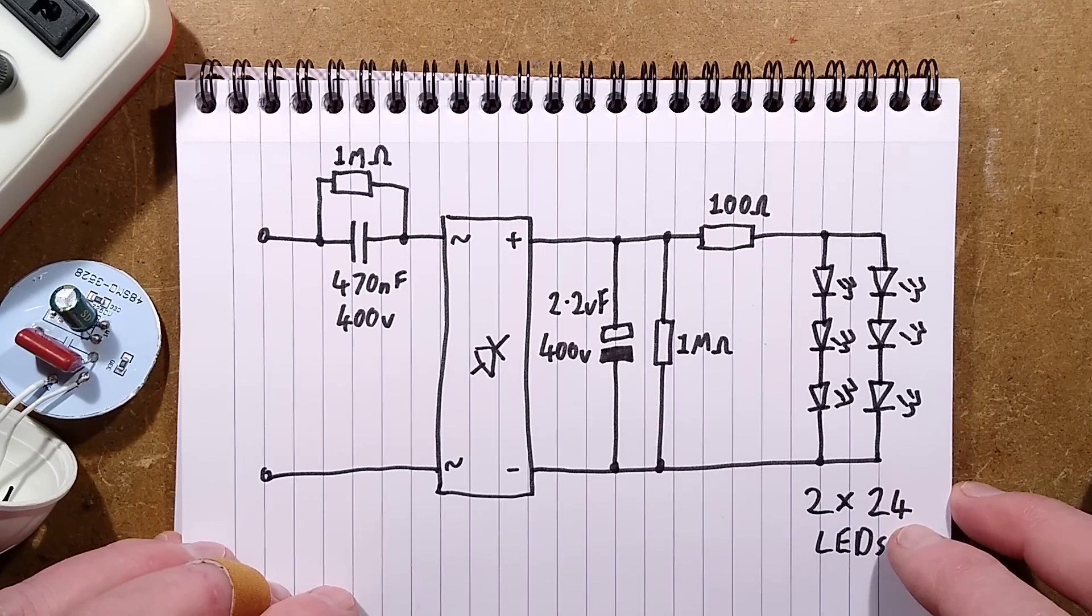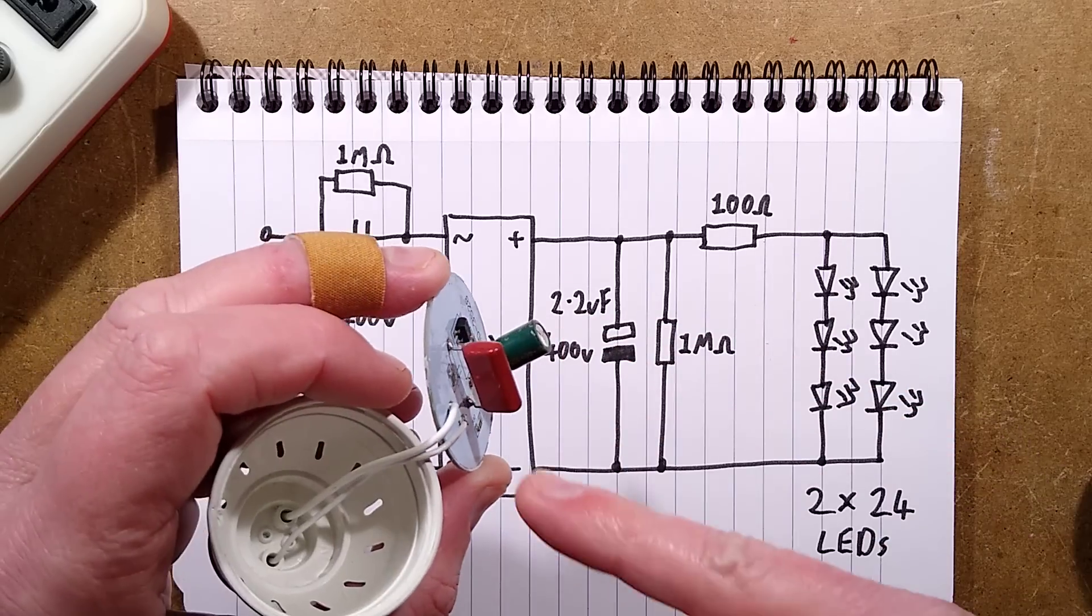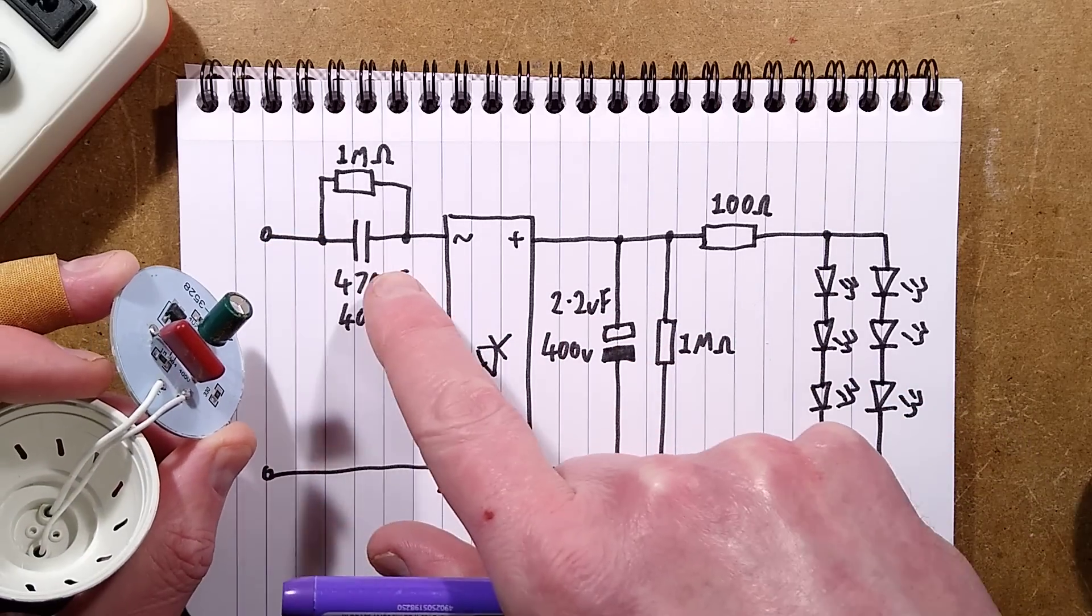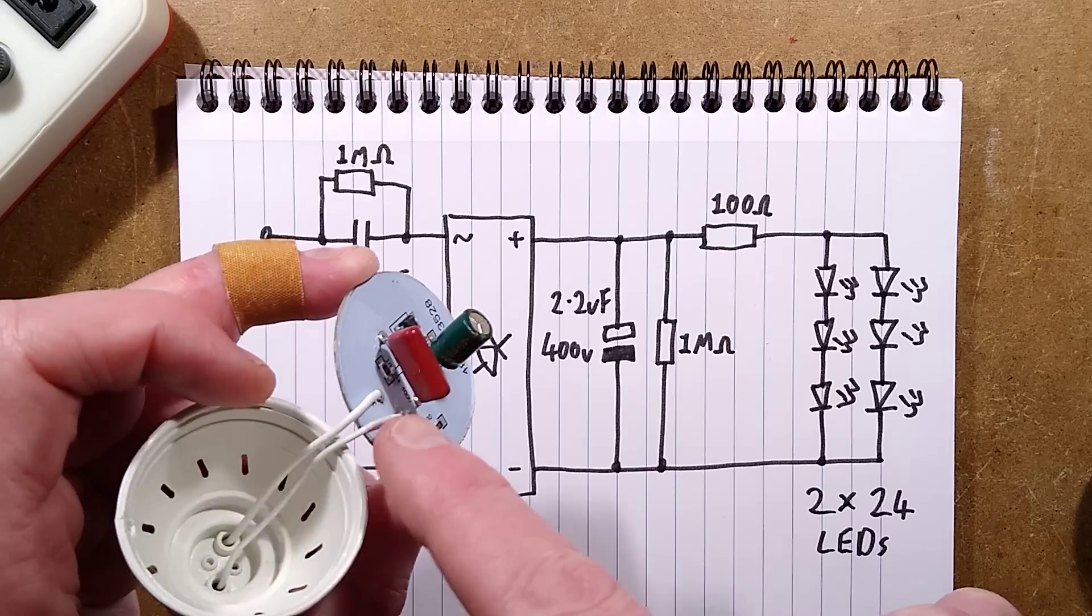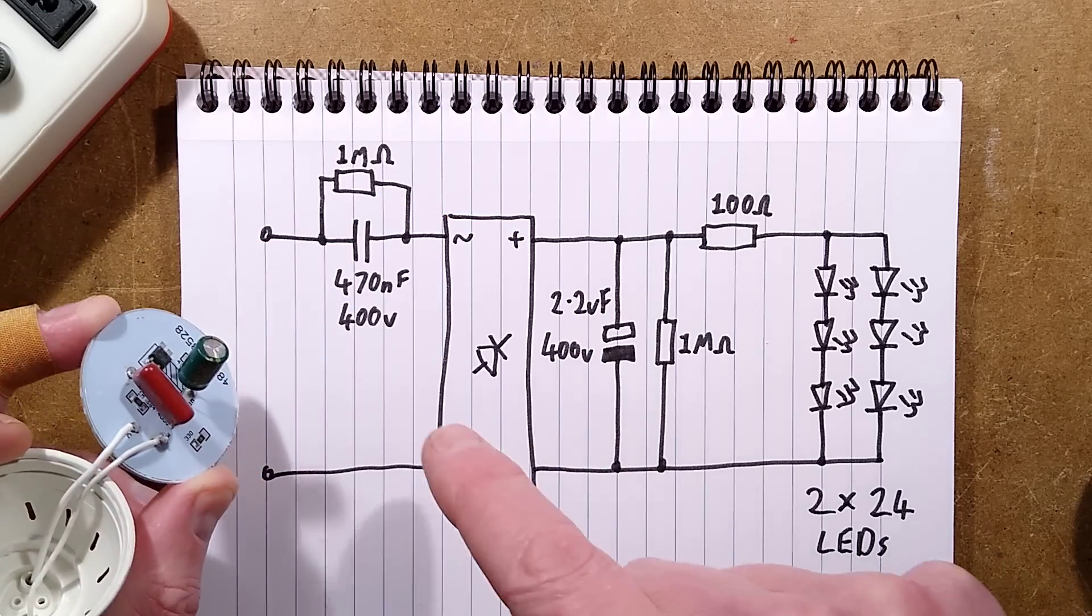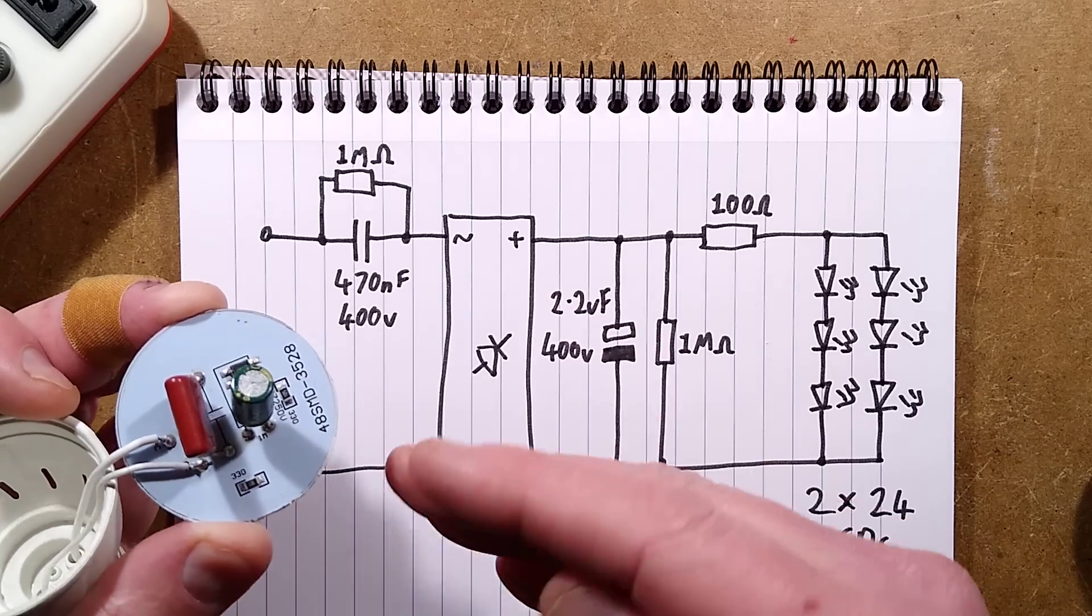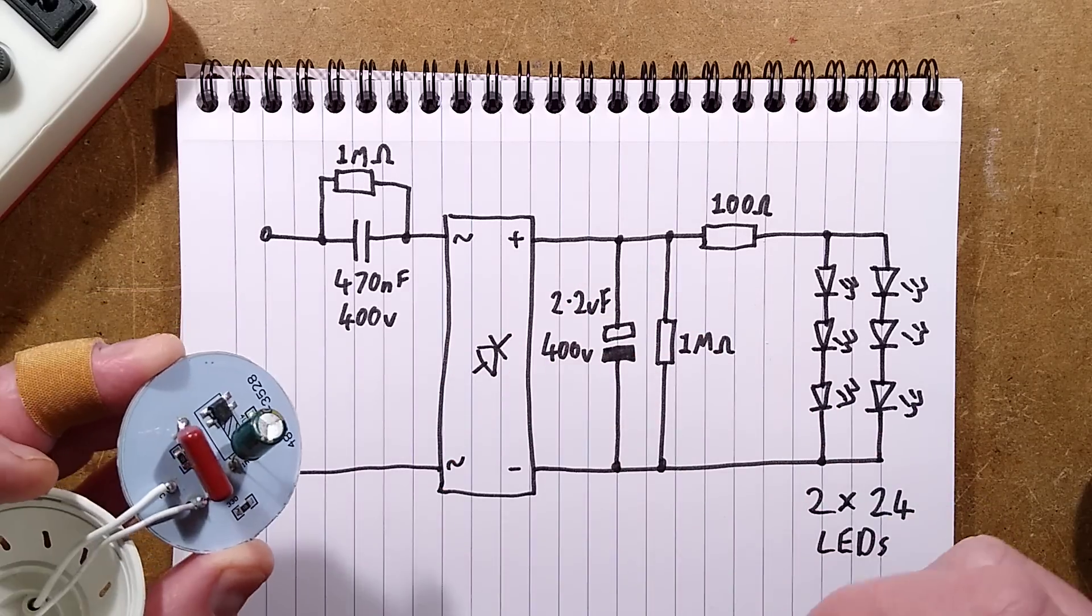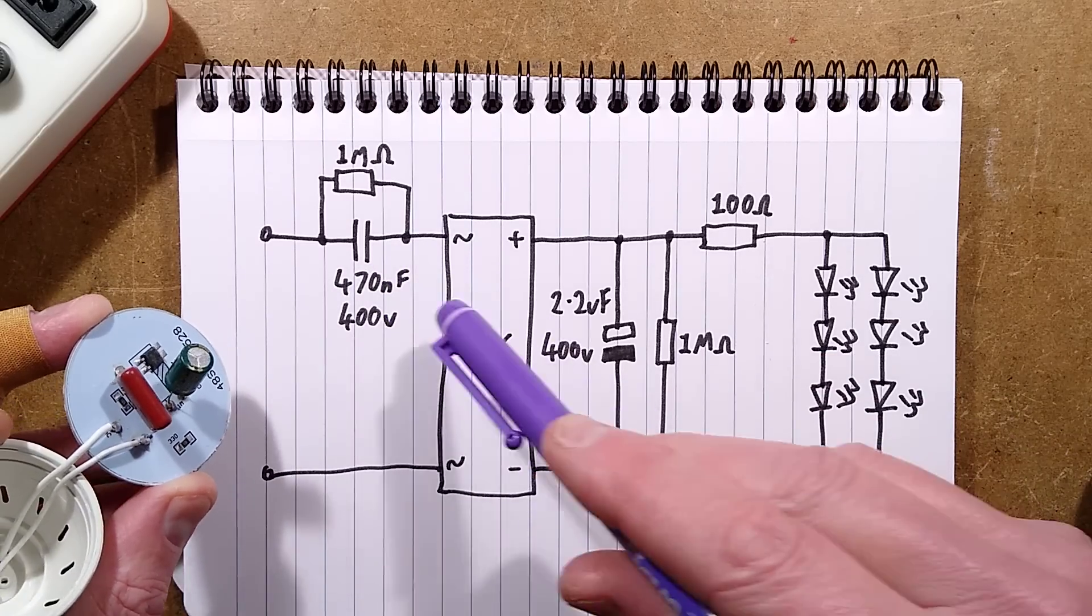The resistor that is used as a safety discharge resistor across the dropper capacitor here is quite a big resistor. Physically, it's quite big. They've not skimped in the resistor sizes as they sometimes do. So it's probably better rated for having a fairly high voltage across it.